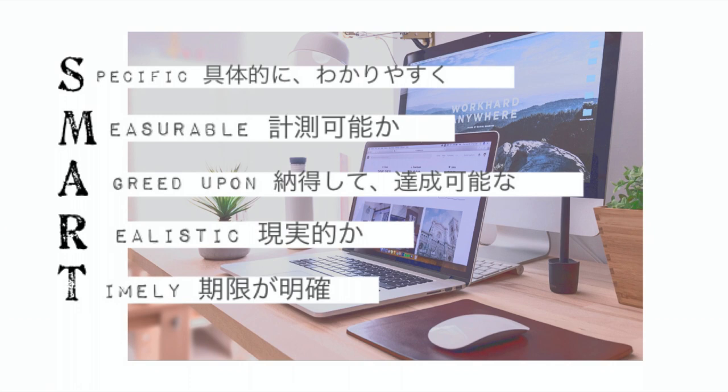MはMeasurable、計測可能か、定量的か。これは評価確認のために必要なんですが、痩せたいとかではなく、年末までに5キロ痩せたいとか、3キロ増えたいとか、目で見て確認できる数字を出します。